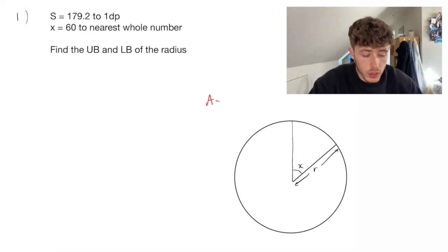Now one thing we're definitely going to use here is the area of a sector is theta, or x in this case, over 360 times by pi times the radius squared, which is the formula for the area of a sector.